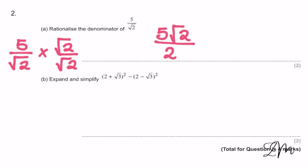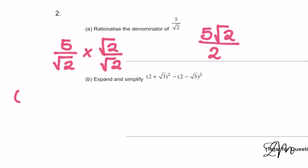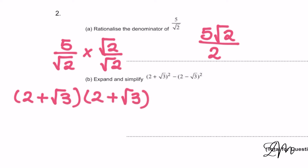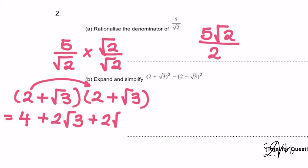Okay, now let's try expand and simplify. We've got (2 + √3) squared, so that's the same as (2 + √3)(2 + √3). Let's expand those: we get 4, plus 2√3, plus another 2√3, plus √3 times √3 which is 3. So here we've got 7 + 4√3, because we can combine — think of √3s like x's: 2x plus 2x gives us 4x.